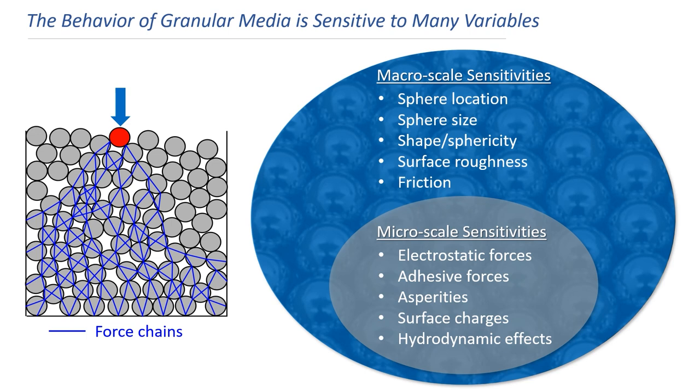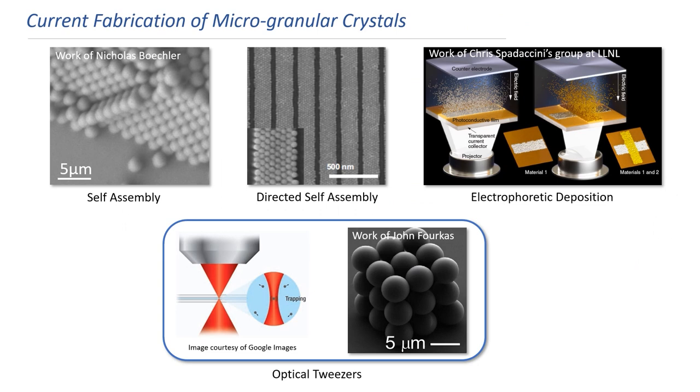And these sensitivities are compounded further on the micro-scale. Microgranular crystals are sensitive to all the same effects to which the macrogranular media is sensitive, but microgranular crystals are additionally sensitive to other scale-dependent effects, such as electrostatic and adhesive forces, asperities, surface charges, and hydrodynamic effects, to name just a few.